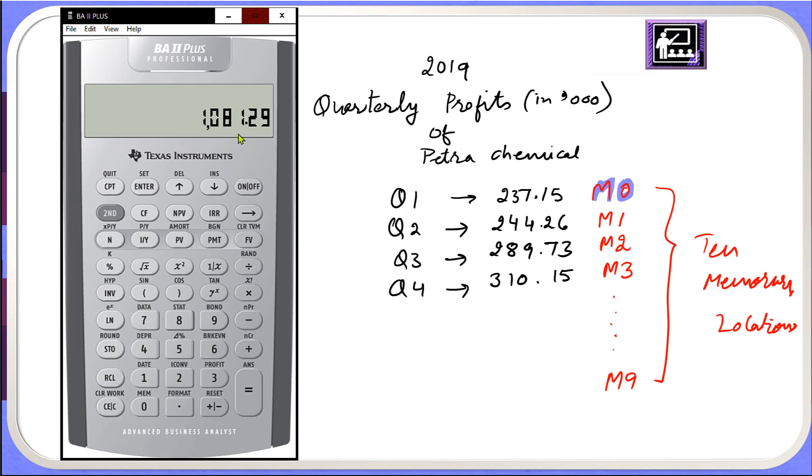Were 1081.29 for the year 2019. So this is how we store, access and recall the 10 memory locations in the BA II Plus calculator. Thanks for watching.